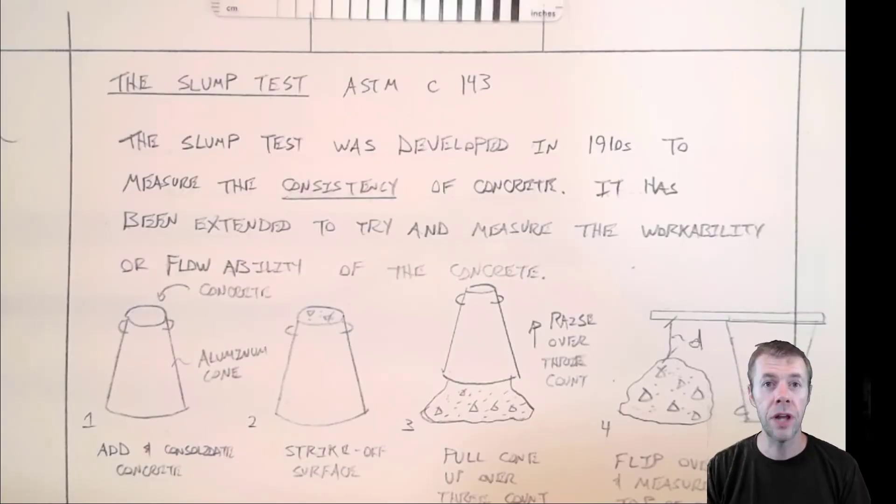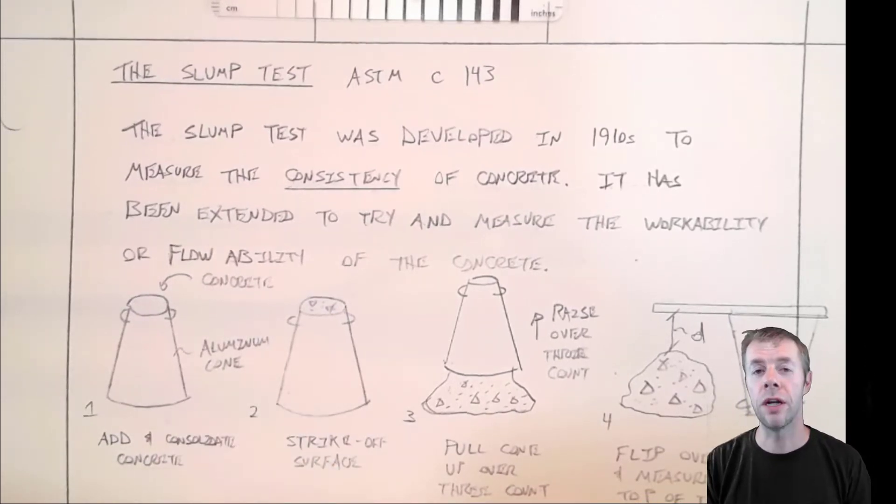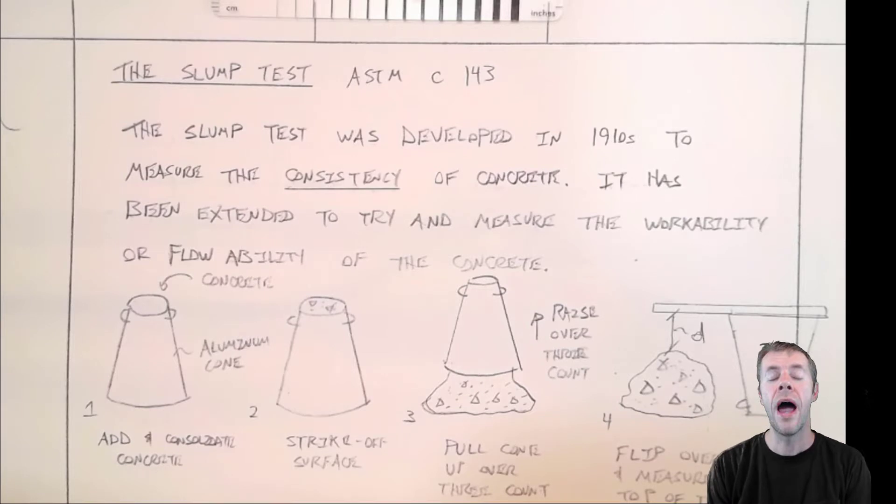The first test I'm going to talk about today is a slump test. This test was developed in the 1910s to measure the consistency of concrete. Now back then concrete was pretty simple, pretty straightforward. And the real way to change how flowable it was was the amount of water.